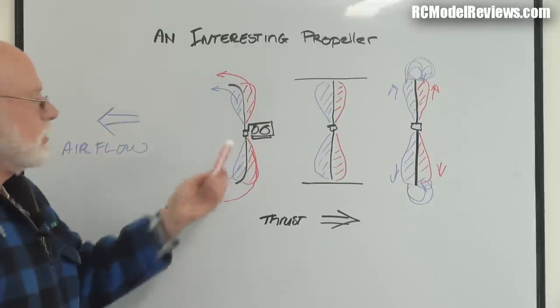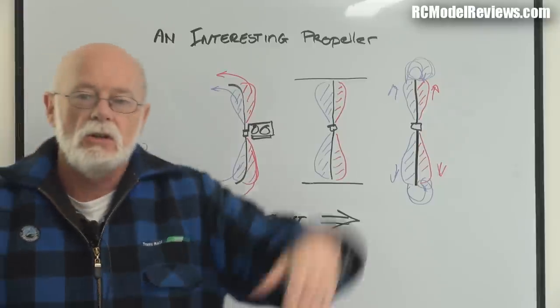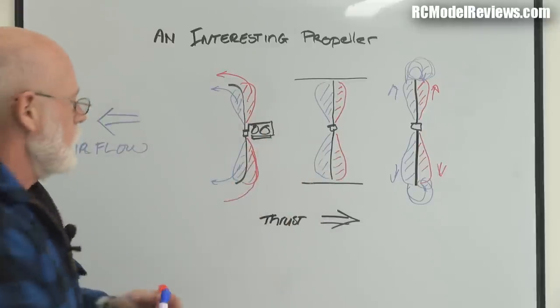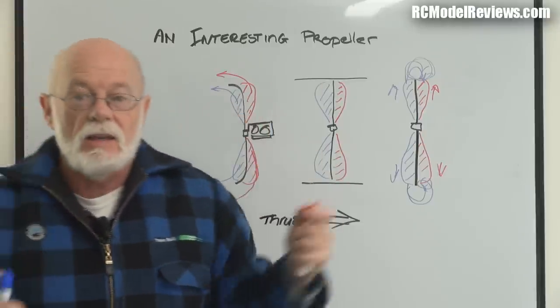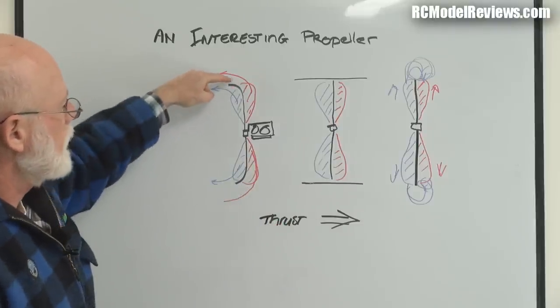So in theory, this prop will produce more thrust because it's creating extra backwards airflow due to the curve of the tip. It does happen to a small degree, but it's offset by the fact that you've got a portion of the propeller here which is producing no lift at all.